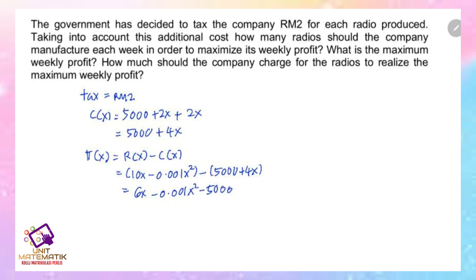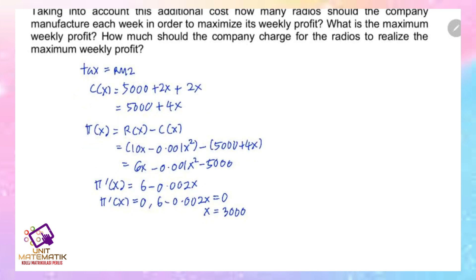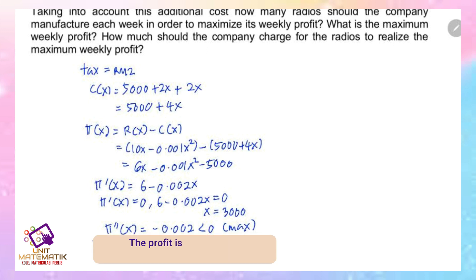To find the new optimal quantity, find the marginal profit: π'(x) = 6 - 0.002x. Equating with zero gives x = 3000. Testing with the second order derivative: π''(x) = -0.002, which is negative, so it is a maximum. The profit is maximum at a production level of 3000 units.